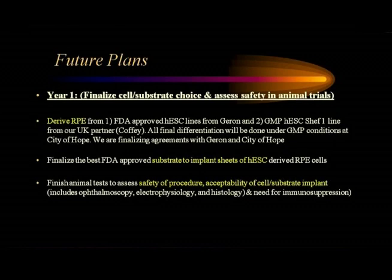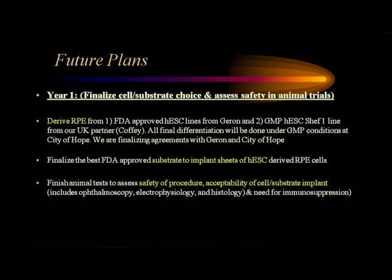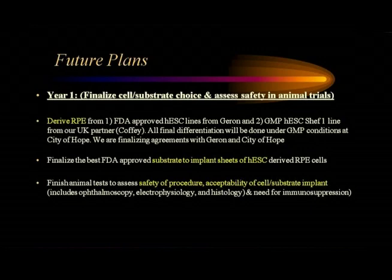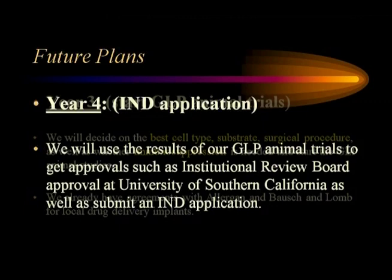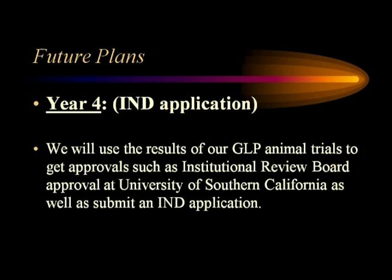Our plans are to take these cells and substrates and start doing safety testing in animal trials, followed by efficacy testing using the behavioral testing we talked about, followed by histology, and then start the good laboratory practice animal trials — which is the data we would submit to the FDA — and follow up with the application to the FDA to start this trial at the Keck School of Medicine.